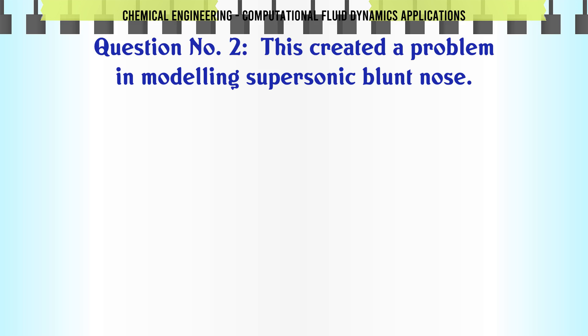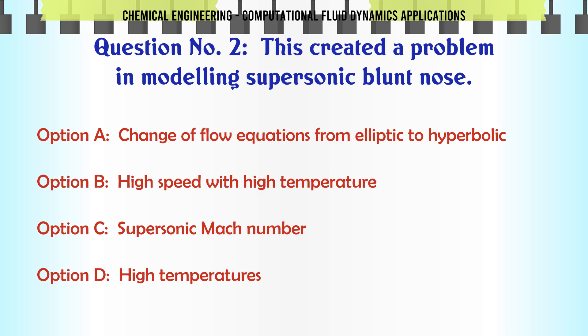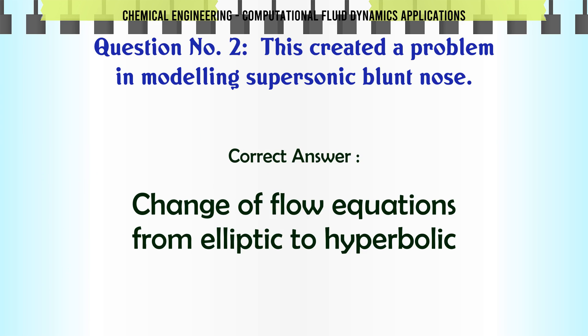This created a problem in modeling supersonic blunt nose. A. Change of flow equations from elliptic to hyperbolic. B. High speed with high temperature. C. Supersonic Mach number. D. High temperatures. The correct answer is: change of flow equations from elliptic to hyperbolic.